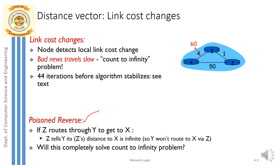Node z is giving wrong information to node y, saying there is a path to reach x at a cost of 5 from z to x via node y. Instead, what z can do is tell a lie: it says the distance from node z to node x is infinity. If this infinity distance is shared with node y, then node y will never take the path via z to reach x.